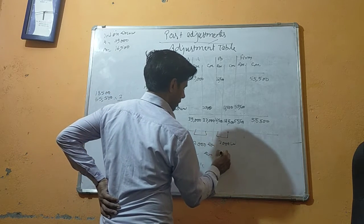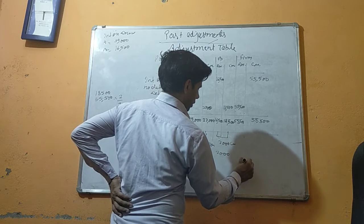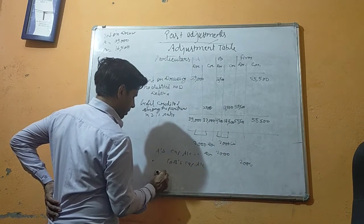Okay, $2,000 and $2,000. The narration you will write: the adjustment entry is passed.